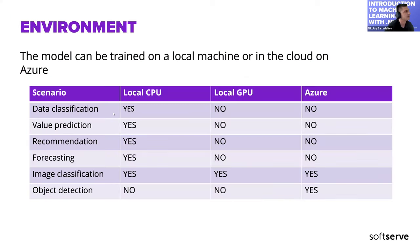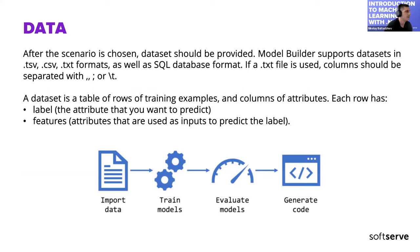After choosing the scenario, we need to choose an environment: local CPU, local GPU, or Azure. The environment available depends on the scenario already chosen. For data classification, value prediction, recommendation, and forecasting we can choose local CPU. For image classification we can choose CPU, GPU, or Azure. For object detection we can only choose Azure. Data can be provided via TSV, CSV, or TXT files, or we can connect to a SQL database.